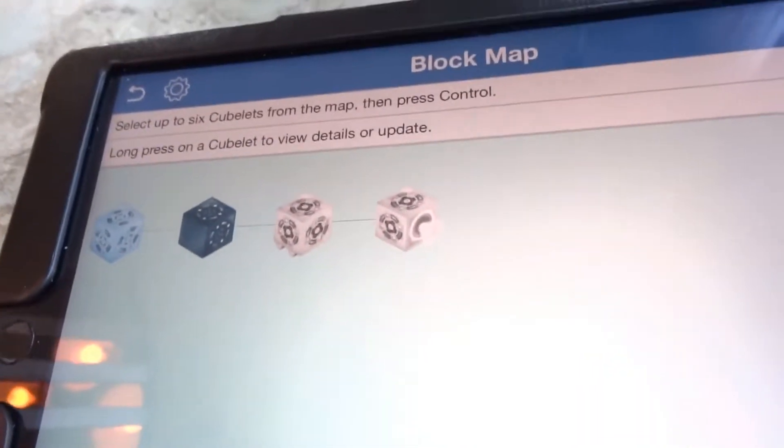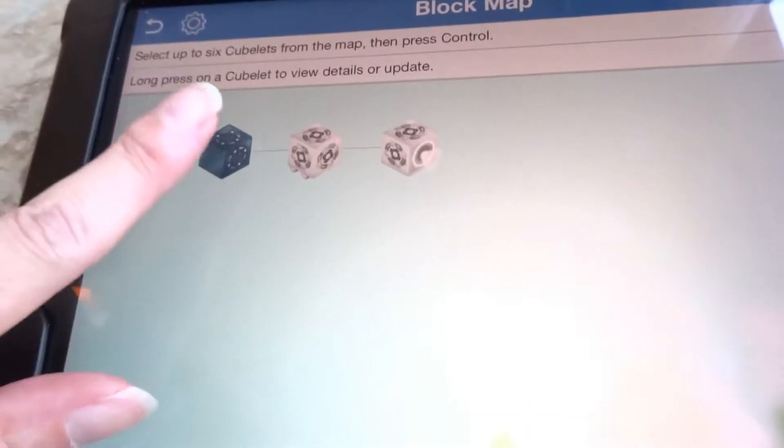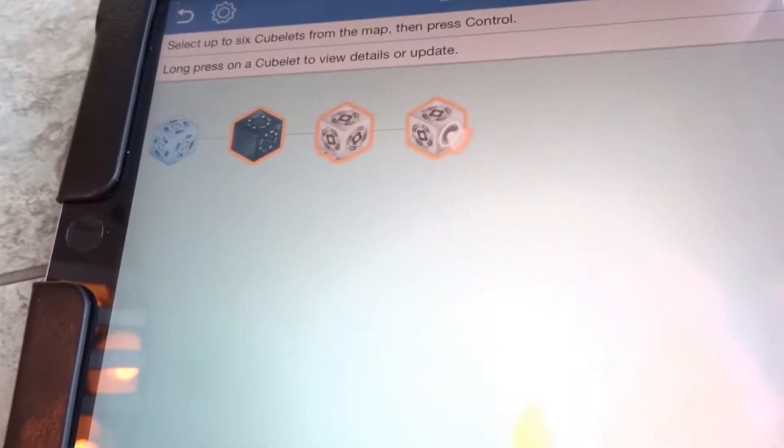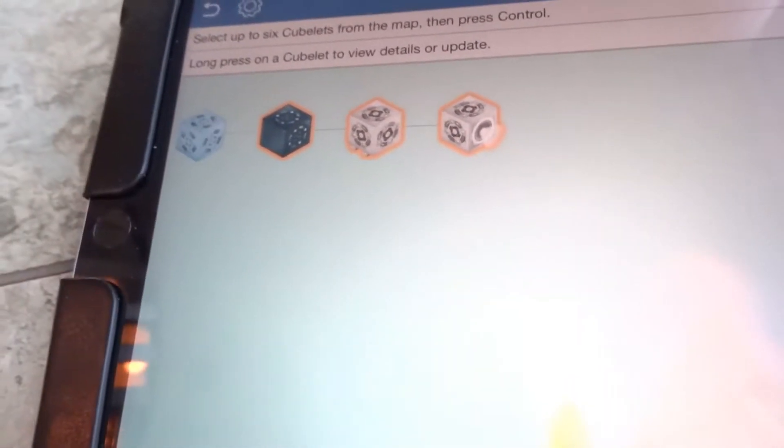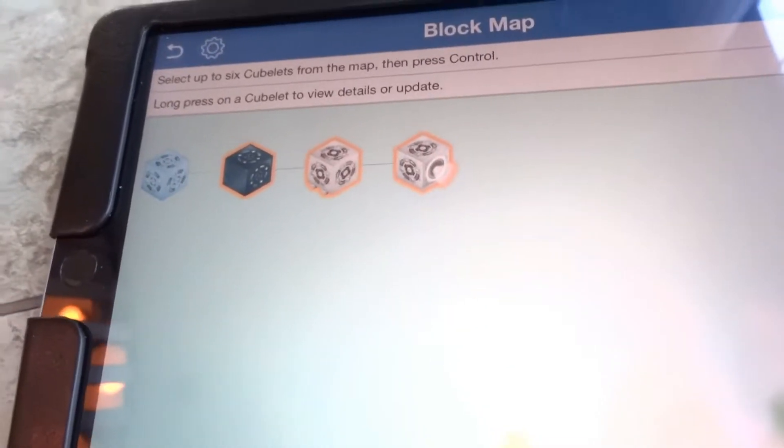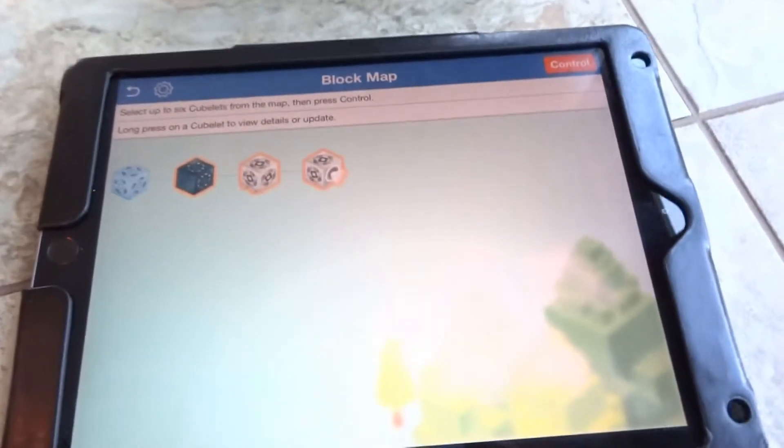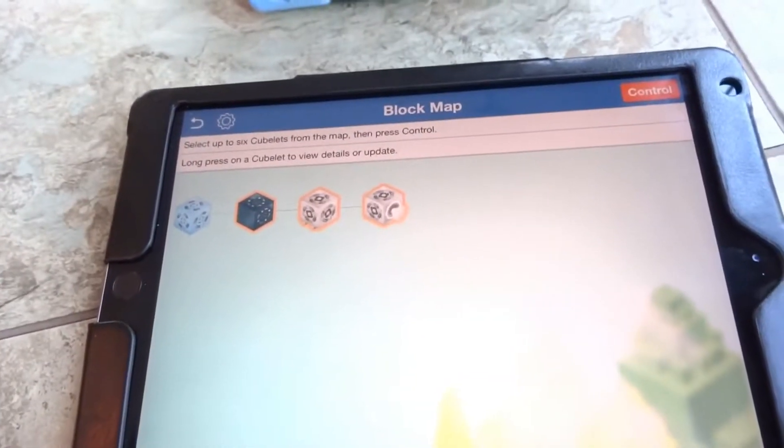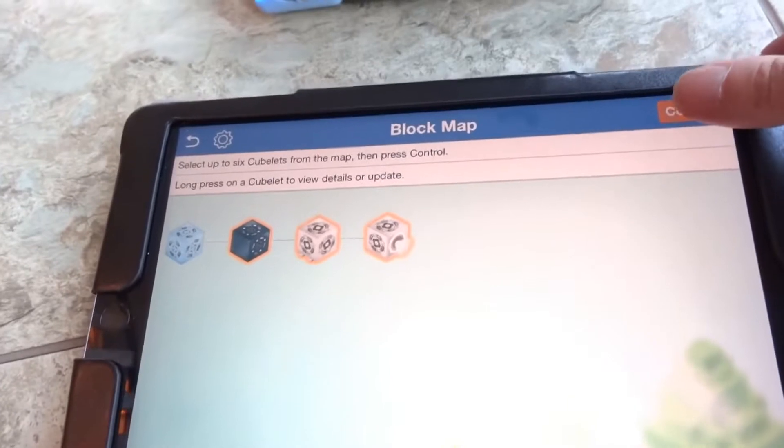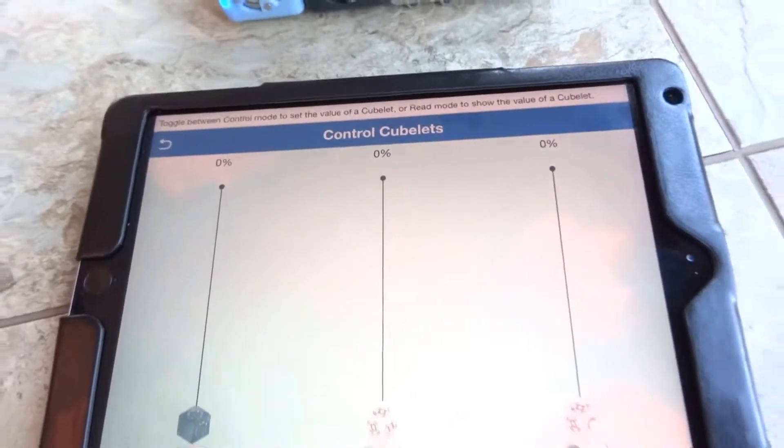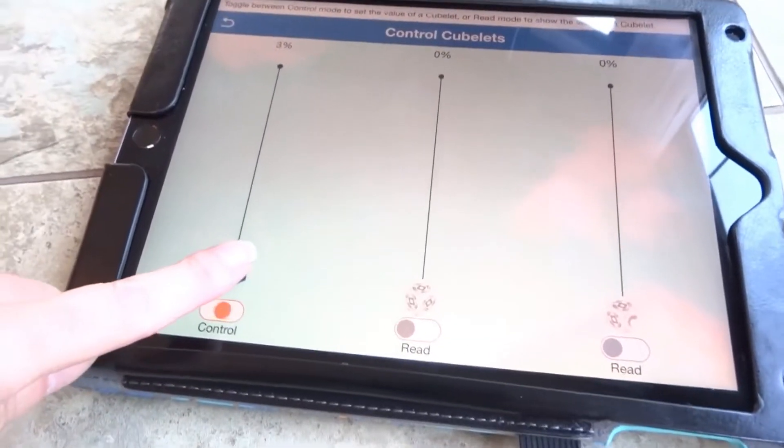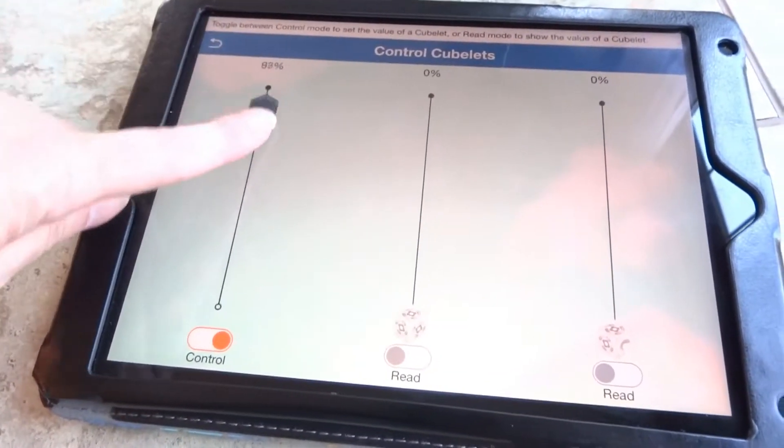Here is the app. You just tap to add the blocks that you're working with, and you get all of these controllers.